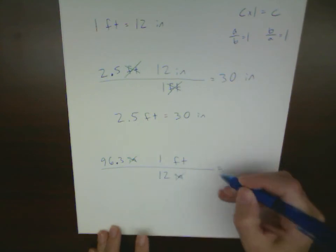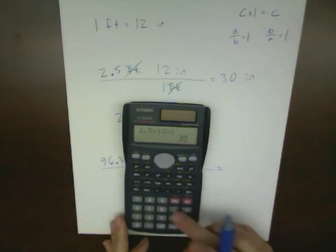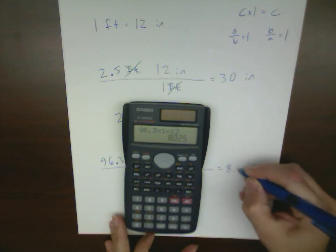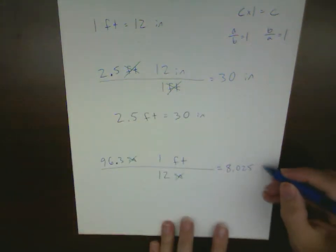And if you put this into your calculator, we do 96.3 times 1 divided by 12, and that gives me 8.025. Again, the units that are left over is feet.